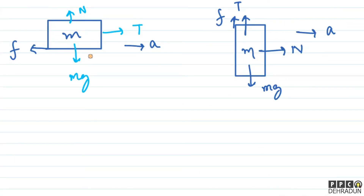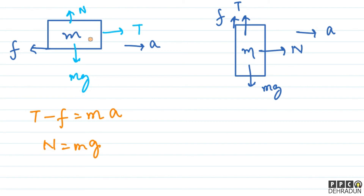For block 1, we can write: Tension minus Friction equals m times a. We also have N equal to mg. The normal force here I'll call N-dash. So N equals mg. The friction is limiting friction — just at the verge of slipping — so we write friction equal to k times N, which gives k times mg.